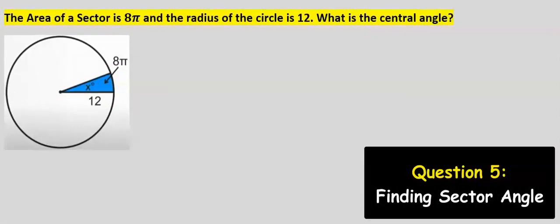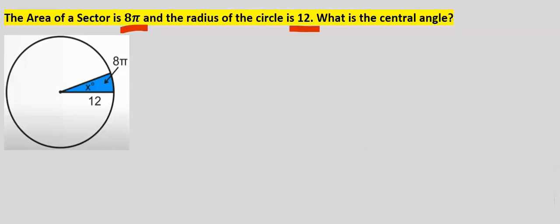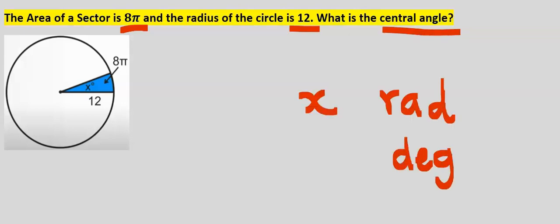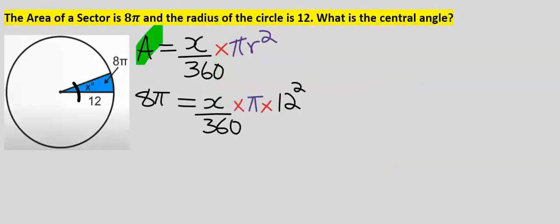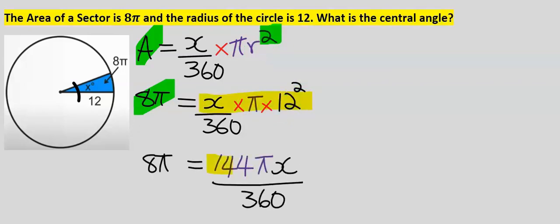The area of the sector is 8π and the radius of the circle is 12. What is the central angle x? Here we have a sector where we are not sure if x is in radians or degrees. Let's try the degrees formula. The area is 8π and the radius is 12. At the numerator everything multiplies, and 360 multiplies at the denominator.